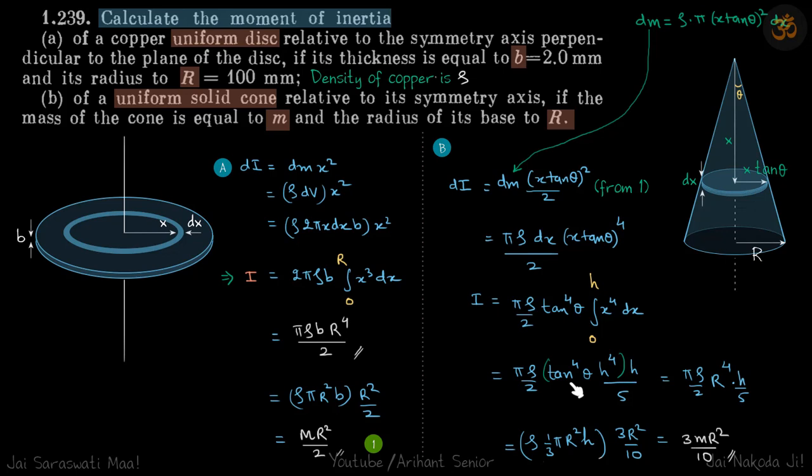When we put the value of tan θ as R/h, the term simplifies to πρR⁴/(2h) × 1/5.